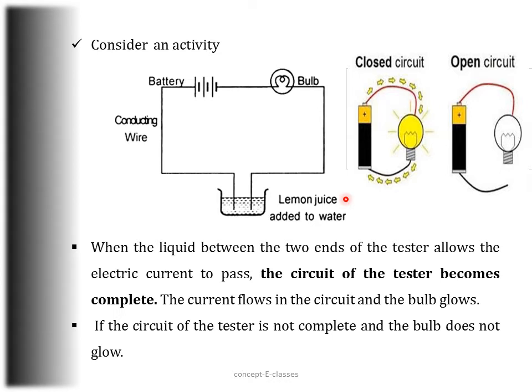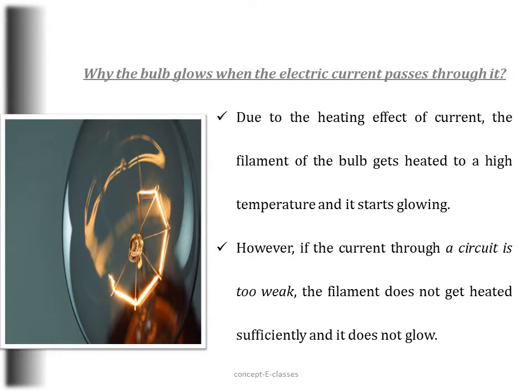Only if a circuit is complete or closed will there be a flow of electricity, and only if electricity flows will the bulb glow. A closed circuit means there will be no break in between. If there is a break, electricity will not flow. If the liquid is a good conductor, the circuit becomes complete and the bulb glows; if the liquid does not allow current to pass, the circuit is not complete and the bulb does not glow.